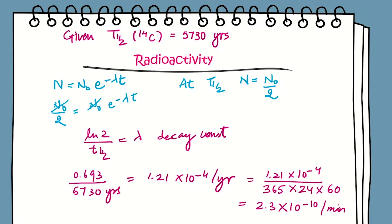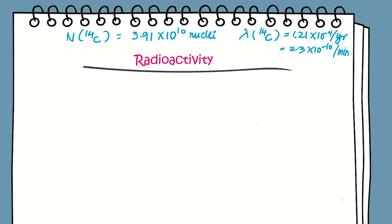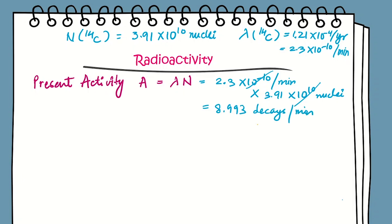We have calculated N and λ for 14C carbon. Now we will find the present activity A, which is equal to λN. So λ is 2.3 × 10^-10 per minute and N is 3.91 × 10^10 nuclei. We can cancel the powers, so we get 8.993 decays per minute.